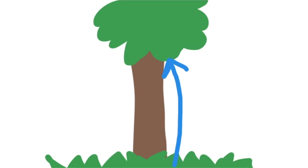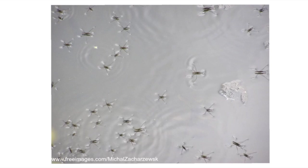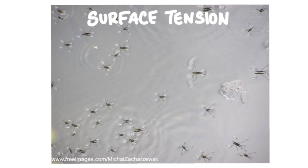Associated with the cohesion of water is water's high surface tension. Surface tension is a measure of how difficult it is to break through the surface of a liquid. The surface tension of water is so high that some creatures can even walk or run across the surface of water.